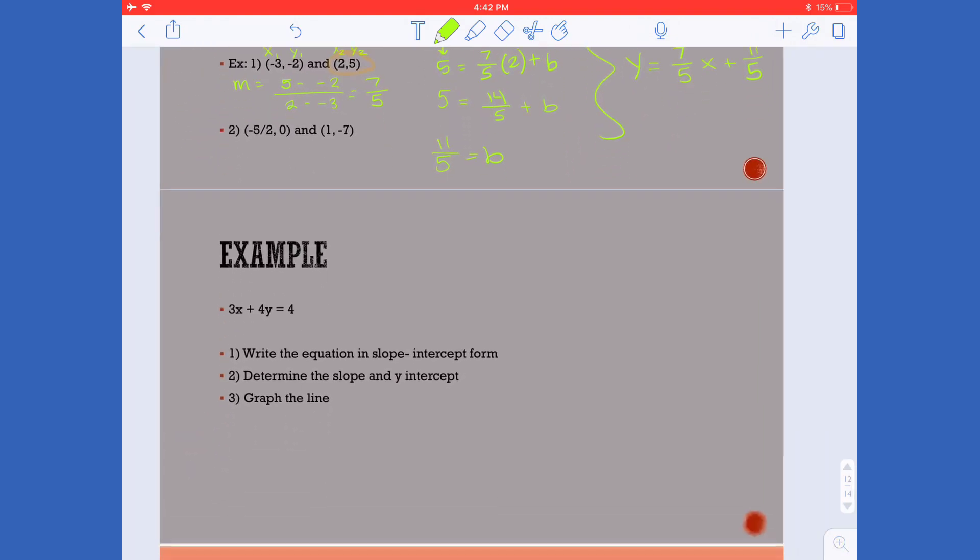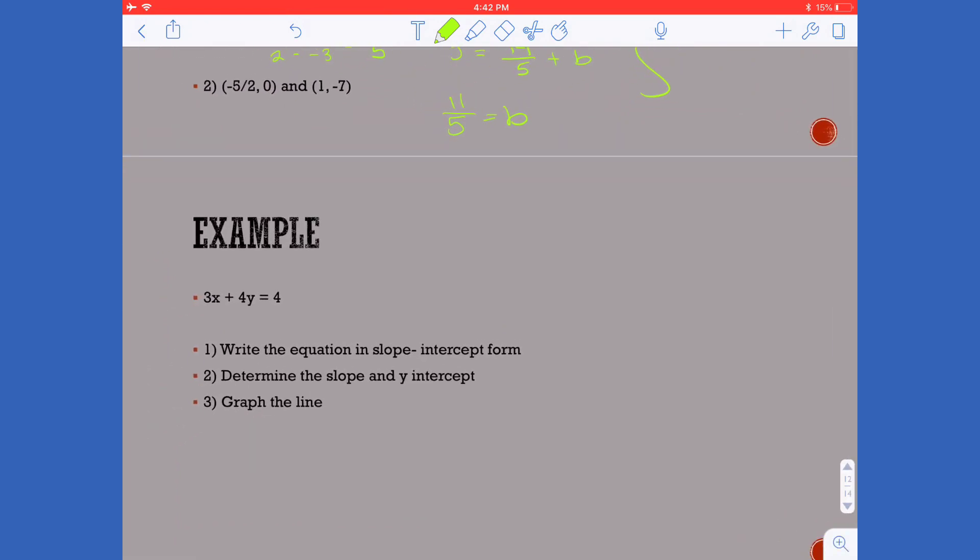Now one way that you may see this and that I may ask on some assignments is give you an equation and ask you to put it in slope intercept form to determine your slope and y intercept and then to graph the line.